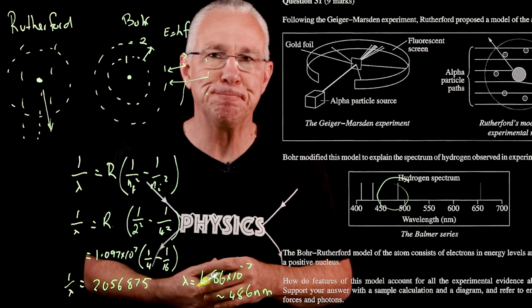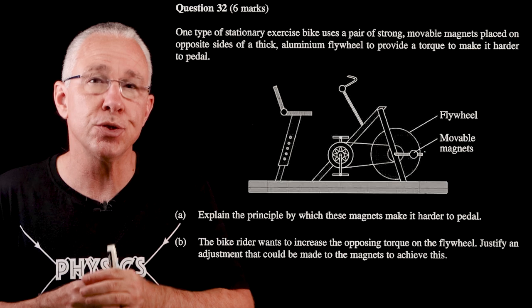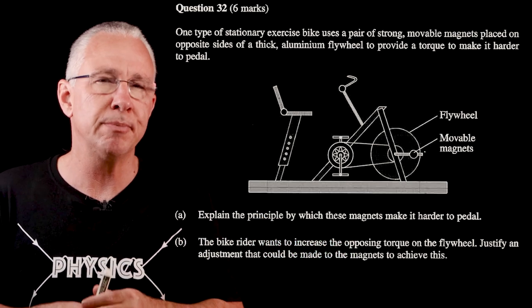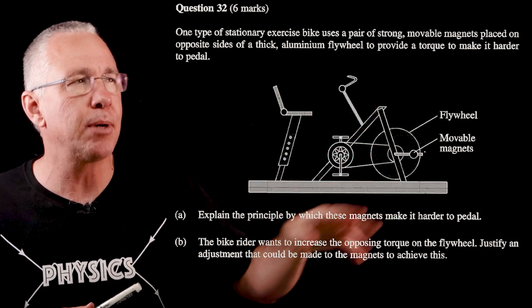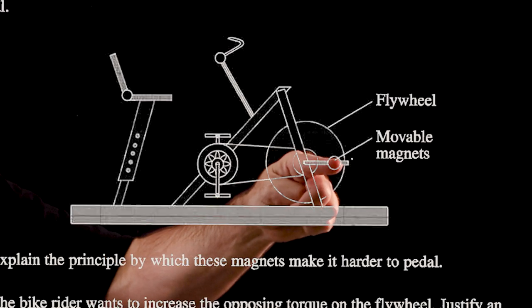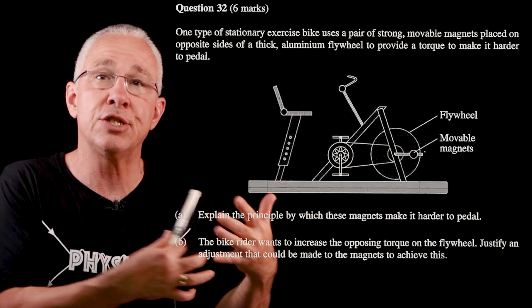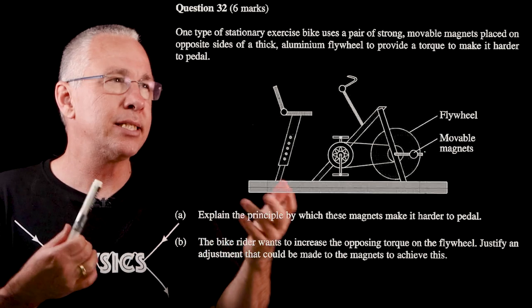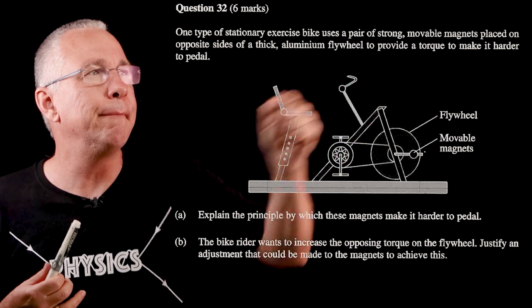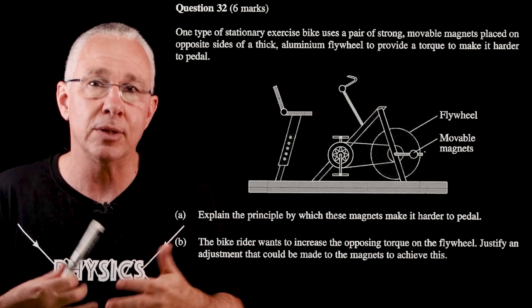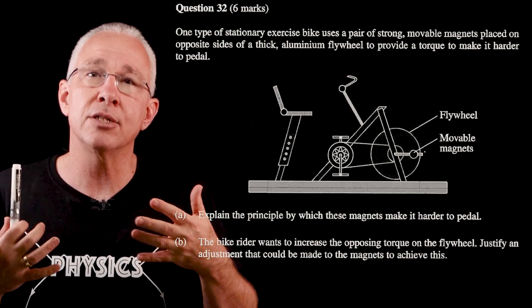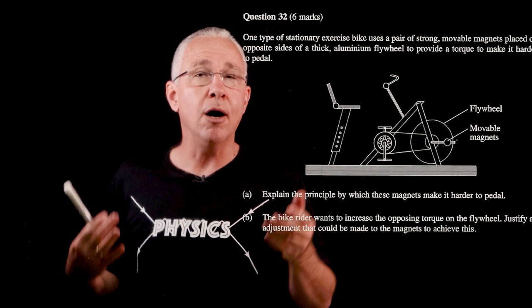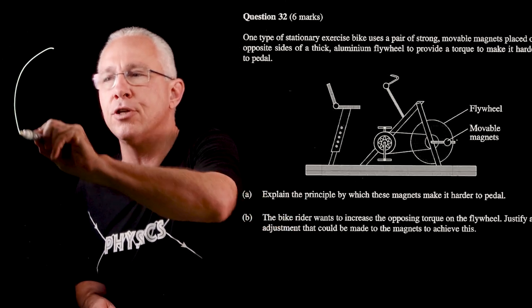This question deals with two components: first, electromagnetic induction — specifically Lenz's law from Module 6 — and second, torque from Module 5. We have an exercise bike with a spinning wheel and a magnet that causes a resistive force on the aluminium flywheel disc, making it harder to pedal. Aluminium is conductive but not ferromagnetic, so it does not respond to stationary magnets — the disc must be spinning for this effect to occur.